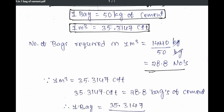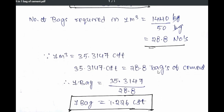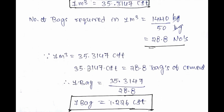Then, as written here: 35.3147 cubic feet equals 28.8 bags of cement. Therefore, one bag equals 35.3147 divided by 28.8, which equals 1.226 cubic feet.